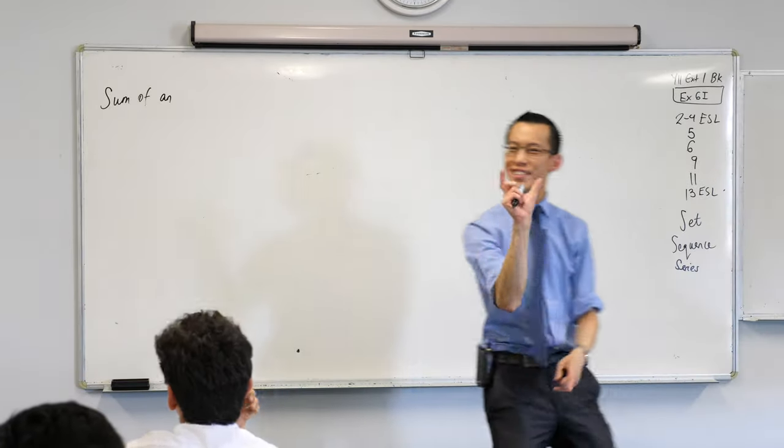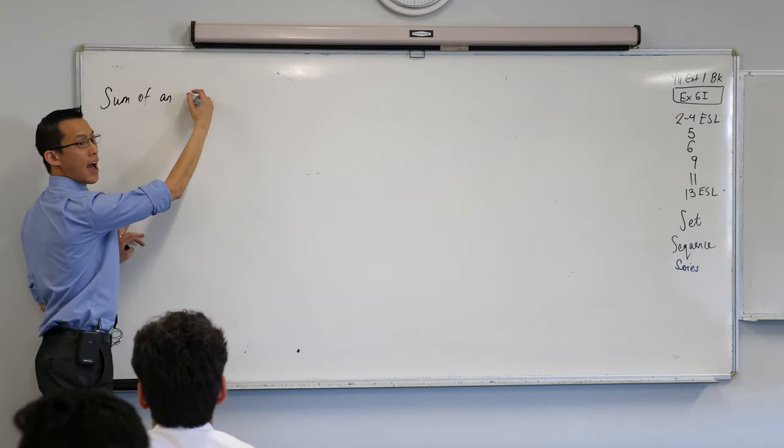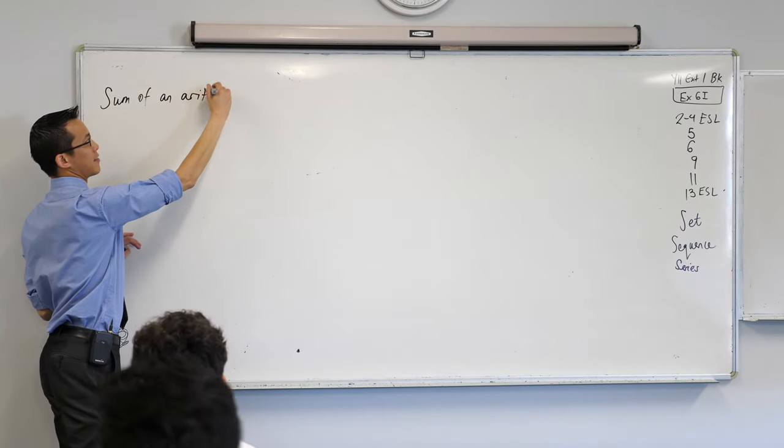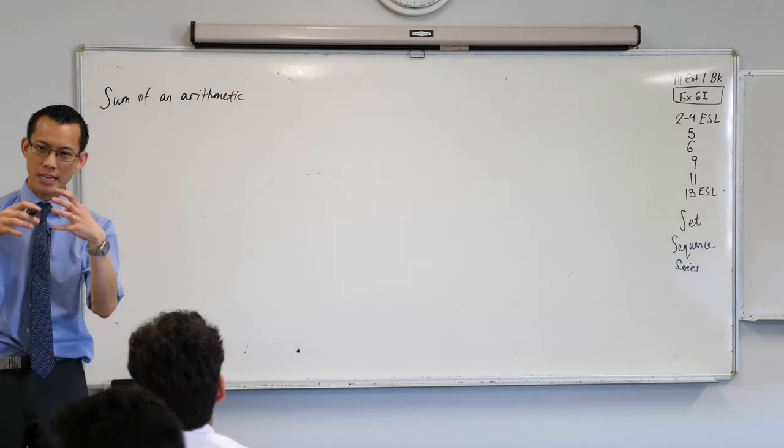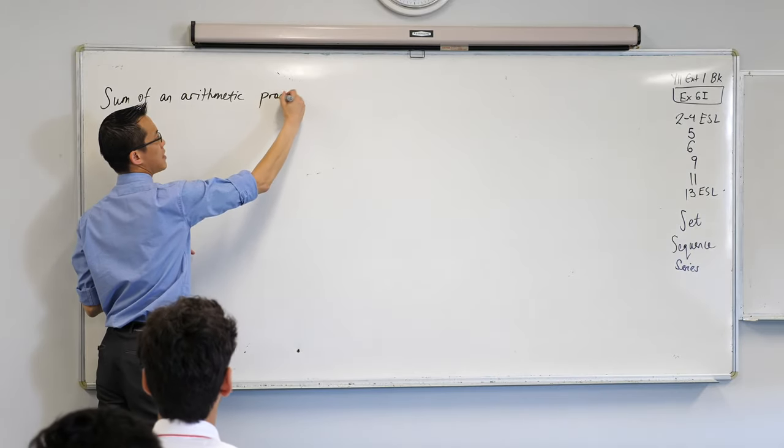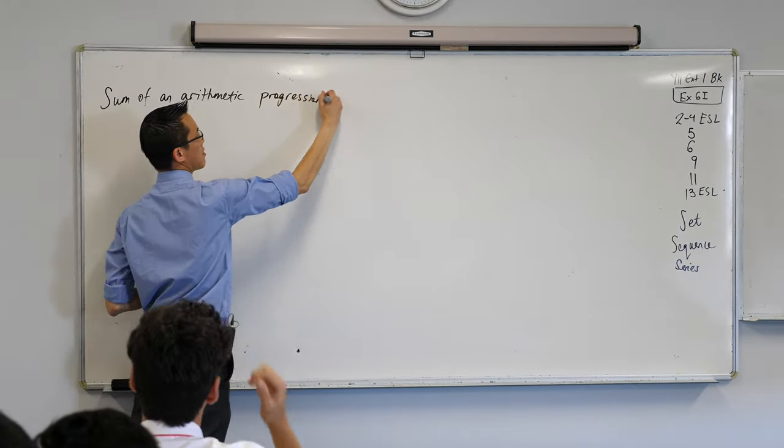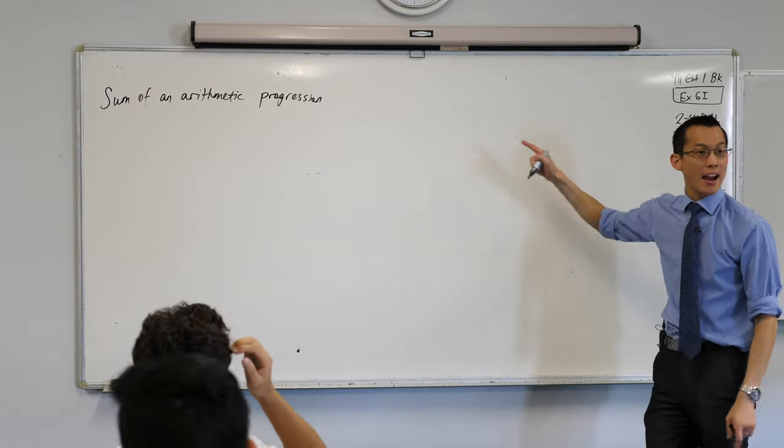So what we're describing here is the sum of an arithmetic progression. Progression is just going to be our word for a bunch of things together in an order, right? So you often get these called APs, no relationship to the exams. The sum of an arithmetic progression.